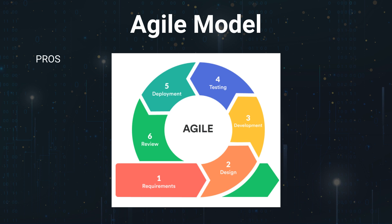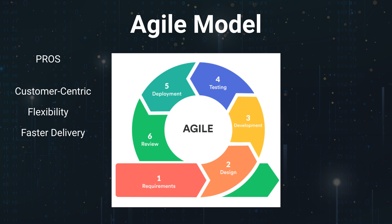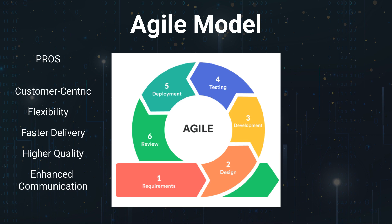Pros of the Agile Model: Customer-Centric — Agile places a strong focus on customer collaboration, ensuring that the software aligns with user needs and can adapt to changing requirements as feedback is integrated during each iteration. Flexibility — Agile embraces change and encourages adaptation throughout the development process, which is invaluable in industries with rapidly changing requirements. Faster Delivery — due to its iterative nature, Agile often leads to quicker delivery of functional software, and clients can see progress early and frequently. Higher Quality — continuous testing and integration result in better software quality, with issues detected and addressed promptly, reducing the likelihood of major defects. Enhanced Communication — Agile promotes daily communication within the development team and regular interactions with clients, ensuring everyone is on the same page.